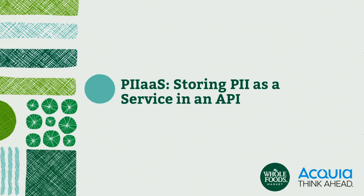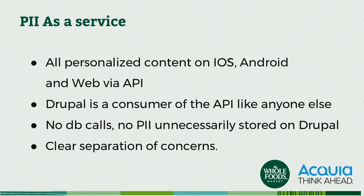Storing personally identifiable information — PII as a service in an API. Our UPM — our Universal Profile Manager — is our attempt at Whole Foods to abstract some of that outside of our web accessible properties. On our end, that can store things like dietary preferences and your email address, and in the past things like your date of birth — whatever you really want to share across properties. But it has the added benefit of taking that PII out of the hackable domains. In our case, Drupal is a consumer of that API just like any other service — almost anything in the company can hit that through a private API. But it's not hitting, from Drupal's perspective, any database calls. We don't store that information; we don't want that information. We've got a really clear separation of concerns on that front.